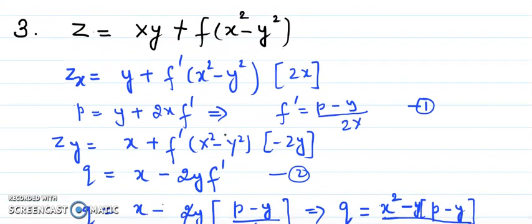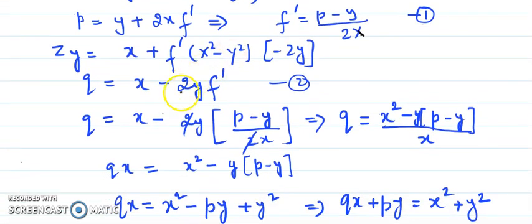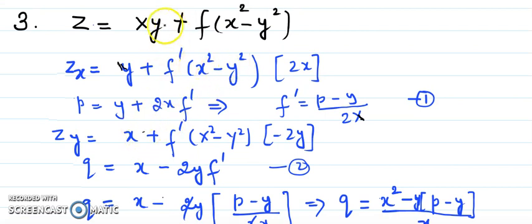Now consider z = x + y + f(x² - y²). Again there is one arbitrary function, so a first-order equation is sufficient. Differentiating with respect to x: the derivative of x is 1 and f'·2x, giving p = 1 + 2x·f'. Thus f' = (p - 1)/(2x). Differentiating with respect to y: derivative of y is 1 and f'·(-2y), giving q = 1 - 2y·f'.